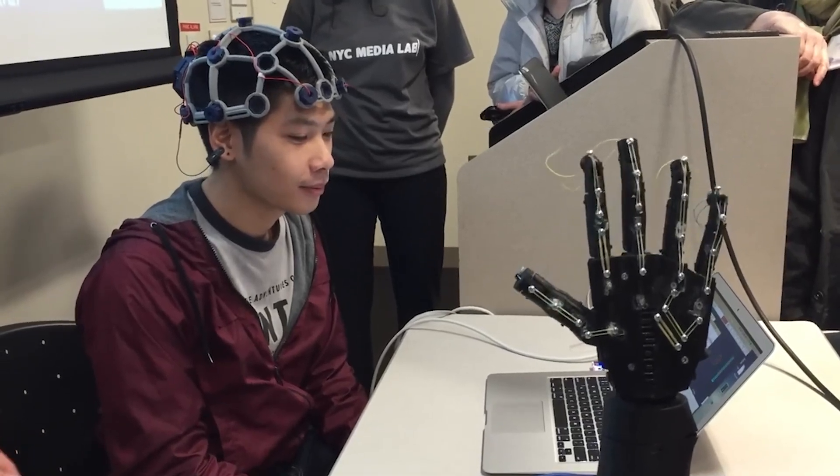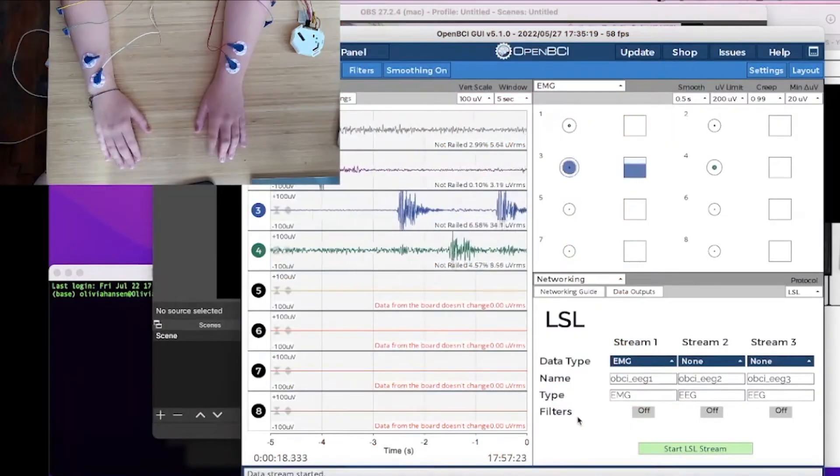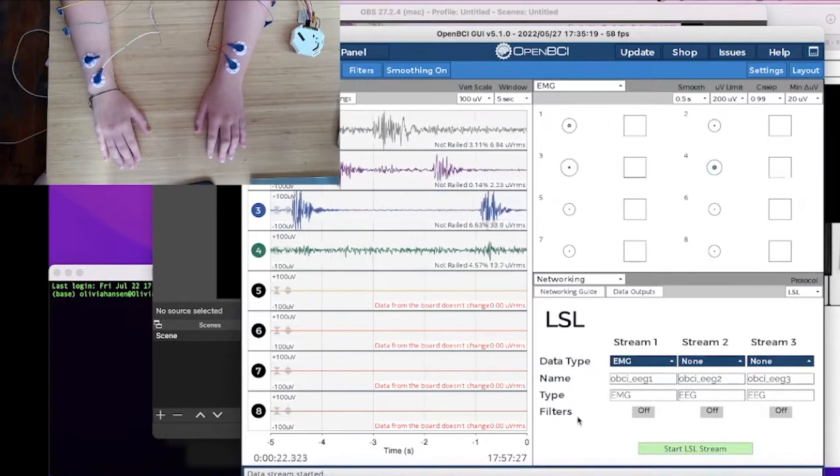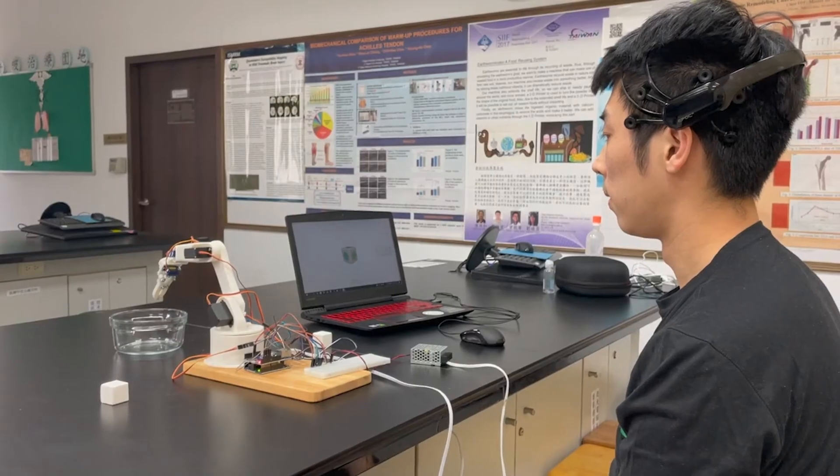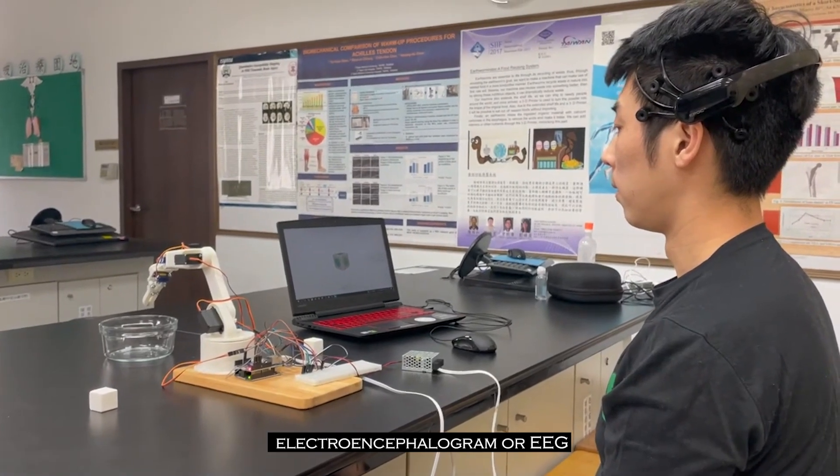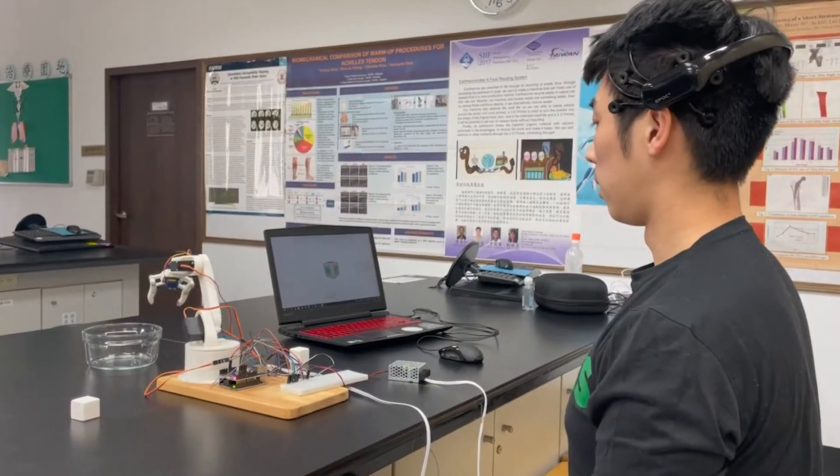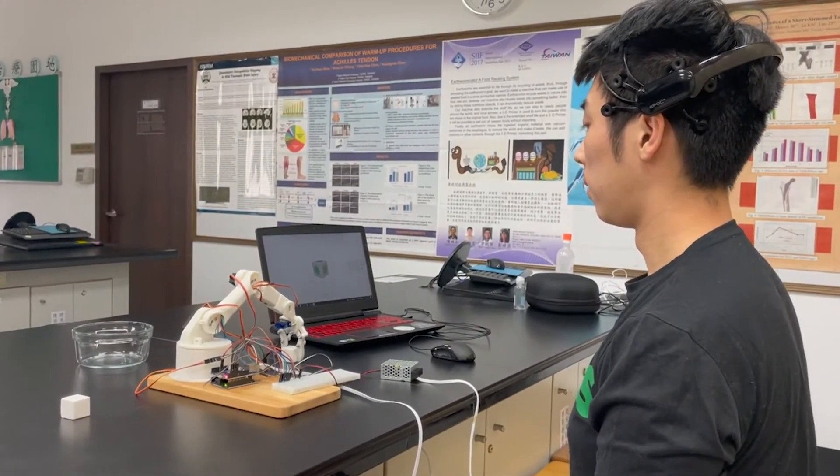OpenBCI is a company contributing to the field through the provision of open-source brain-computer interface hardware and software. The devices empower researchers, developers, and enthusiasts to explore and experiment with brain-signal processing. Emotiv specializes in electroencephalogram or EEG technology, offering headsets capable of reading and interpreting brain activity. Users can control devices or interact with virtual environments using their thoughts.